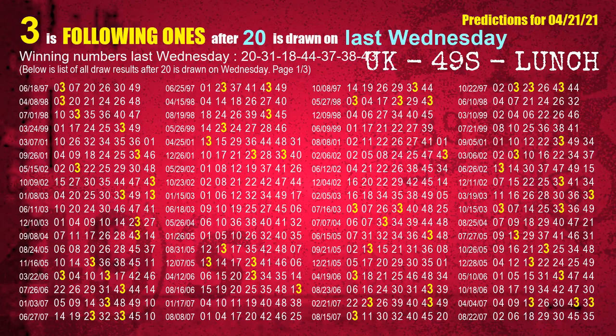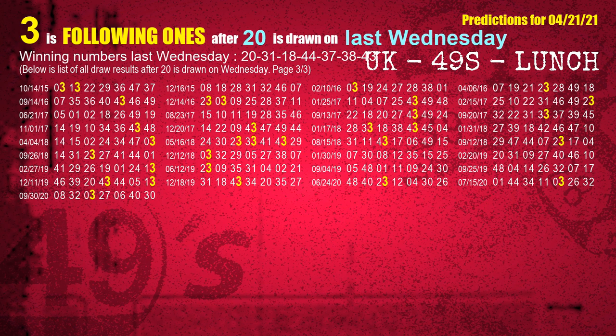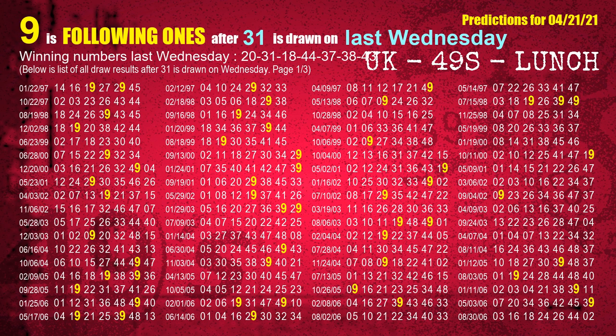After calculating following ones with today's result, we will find out following ones through the result of the same day last week. The first winning number last Wednesday is 20. We list all draw results which are one week after a Wednesday draw with 20 as a winning number. The most frequently following units digit is 3 when 20 is the winning number on last Wednesday. We highlight units digit 3 in yellow. The second winning number last Wednesday is 31. The most frequently following units digit is 9 when 31 is the winning number on last Wednesday.